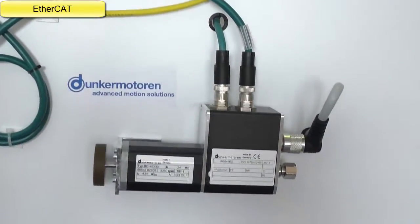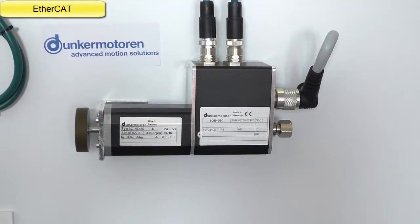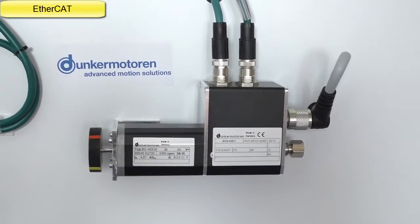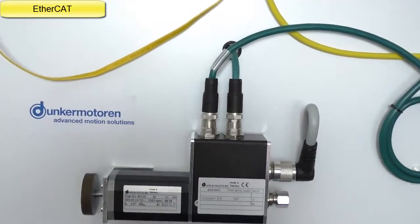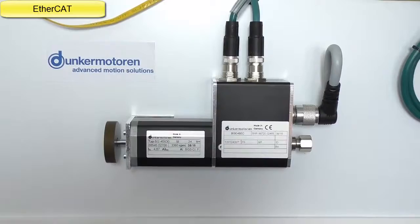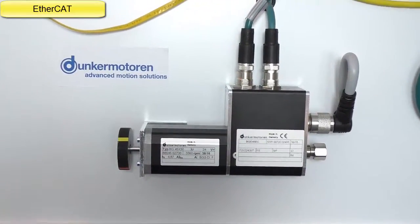We follow the green line going to two Dunkermotoren motors with integrated amplifiers and EtherCAT interface. Those are Dunkermotoren BGE45.